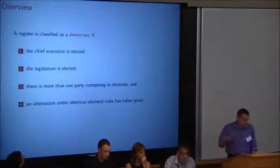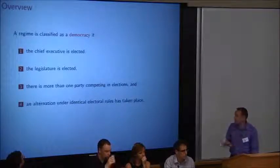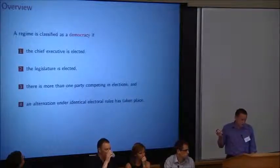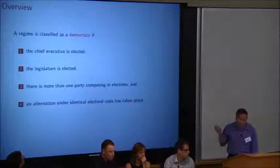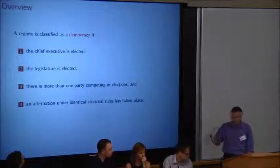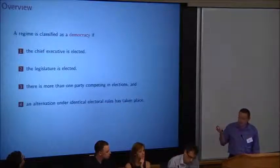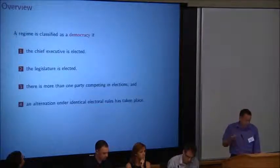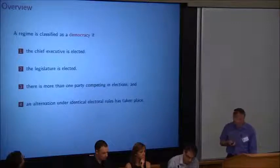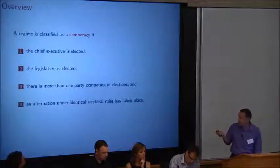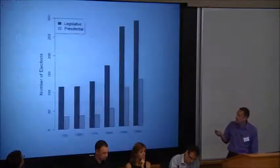Just to give you a sense of what's in the data, again, we only look at democracies. These are the rules, the Cheibub, Gandhi, Vreeland, originally the Przeworski rules. All four of these questions need to be met with a yes for it to be a democracy. If any one of them is missing, we have a dictatorship and they're not in our dataset.